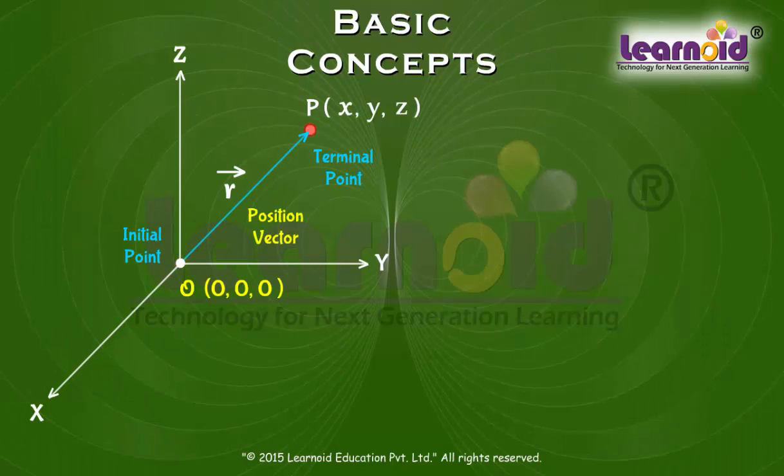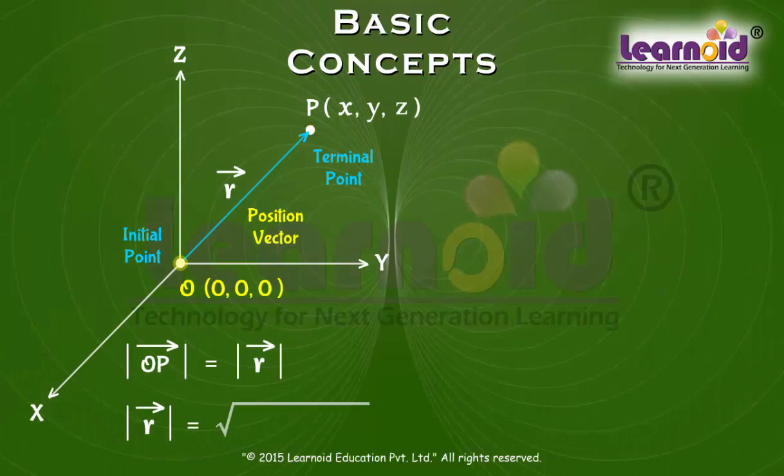Using distance formula, the magnitude of vector OP or vector R is equal to square root of X square plus Y square plus Z square.